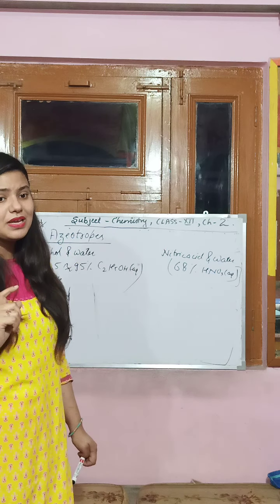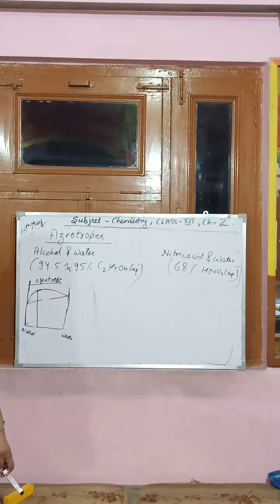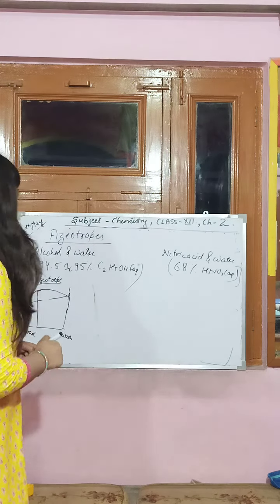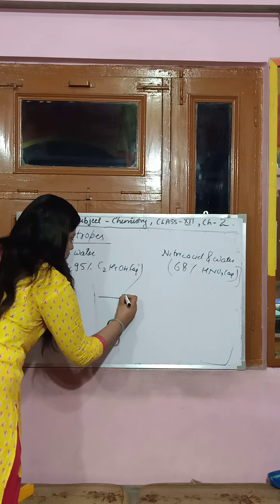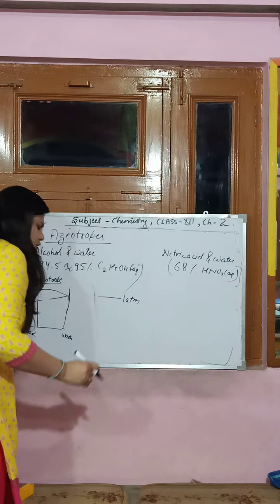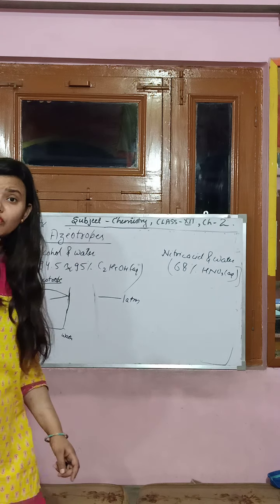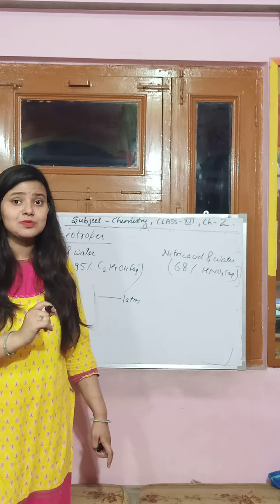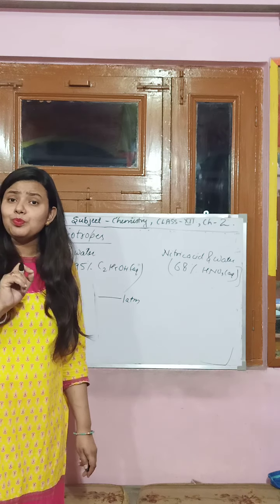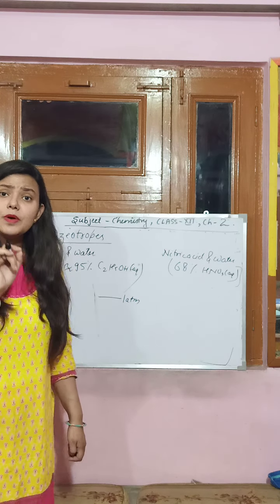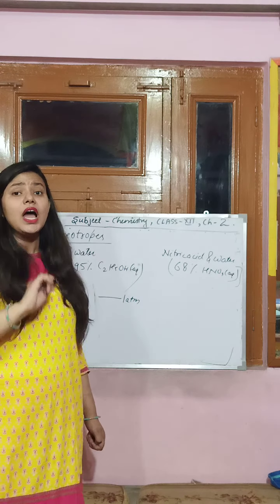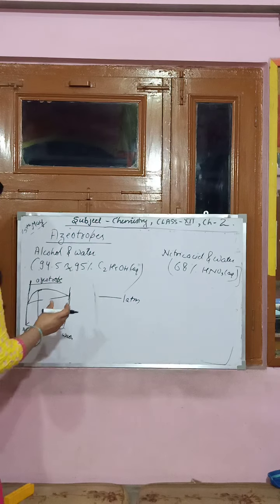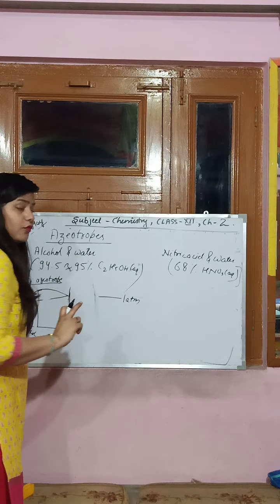Look at this — you know that atmospheric pressure is fixed. The definition of boiling point from Class 11 is: the temperature at which the vapor pressure of the liquid becomes equal to the atmospheric pressure is known as the boiling point. Suppose atmospheric pressure is 1 atm.